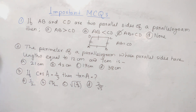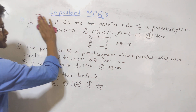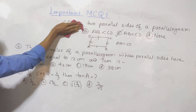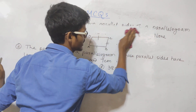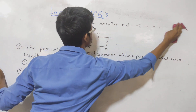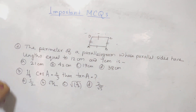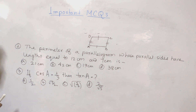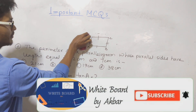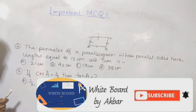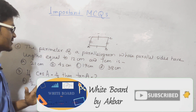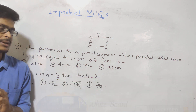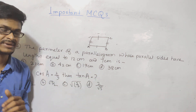Let's see the next question. The perimeter of a parallelogram whose parallel sides have length equal to 12 cm and 7 cm.